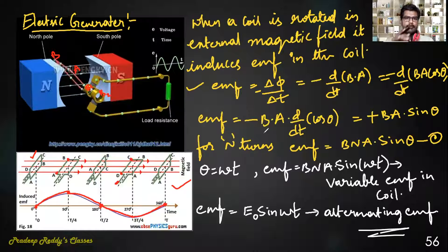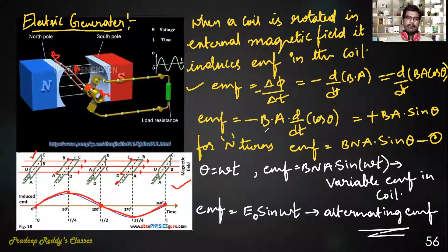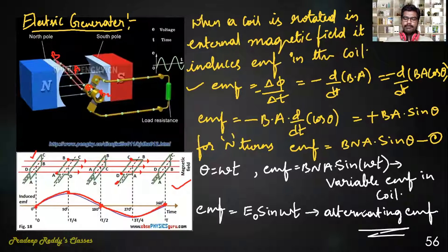For every one complete revolution of the coil in an external magnetic field, the EMF is altering. Such EMF developed in the electric generator is alternating EMF, which is practically obtained in power stations.